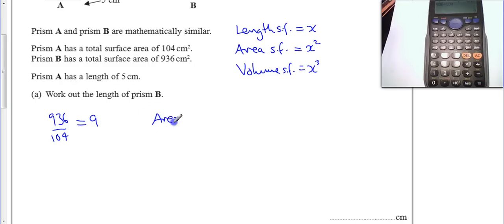So we know the area scale factor is 9. That means the areas have got 9 times bigger, that means the length, this one is getting 9, so the length must be 3 times bigger. And we can probably guess the volume is going to be 27 times bigger.